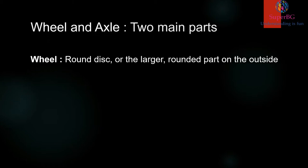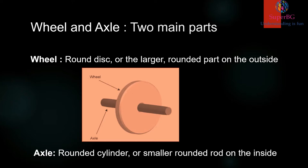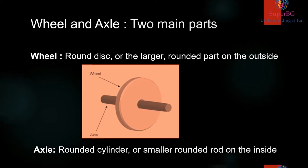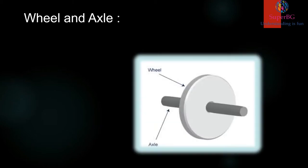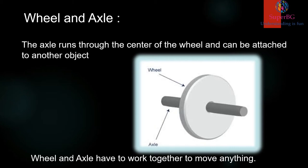Wheel and axle has two main parts. Wheel, the round disc or the larger rounded part on the outside. Axle, rounded cylinder or smaller rounded rod on the inside. The axle runs through the center of the wheel and can be attached to another object. Wheel and axle have to work together to move anything.